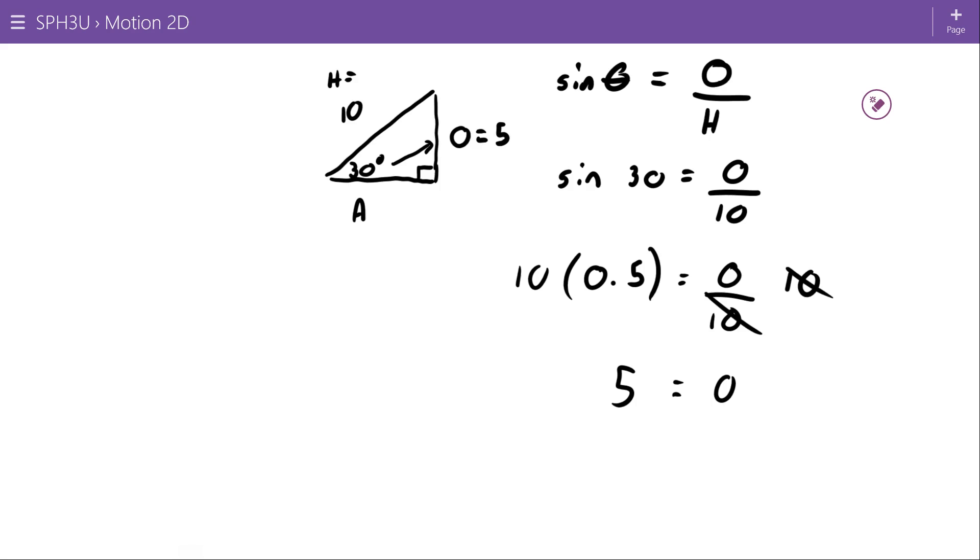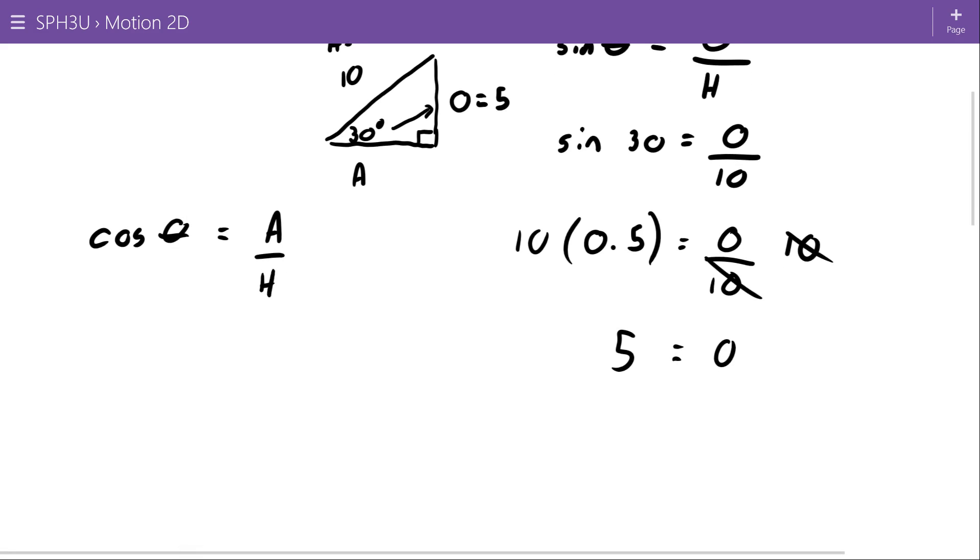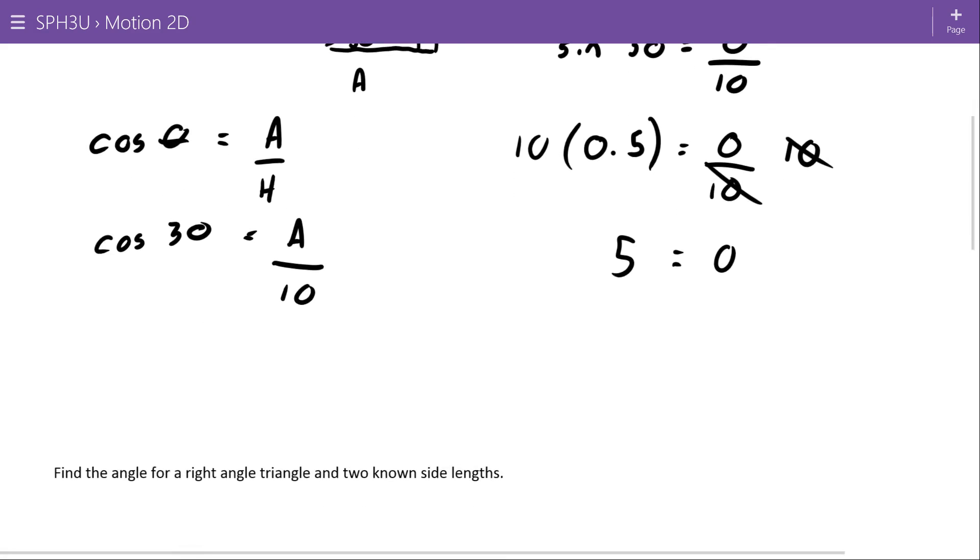On the adjacent side, again I'm going to use my given information, my hypotenuse. So I'm going to say that my cos of theta is equal to my adjacent over my hypotenuse. And if I insert my numbers here, cos 30 equals adjacent over 10. And for cos 30, you're probably just going to grab your calculator. It works out to 0.866.